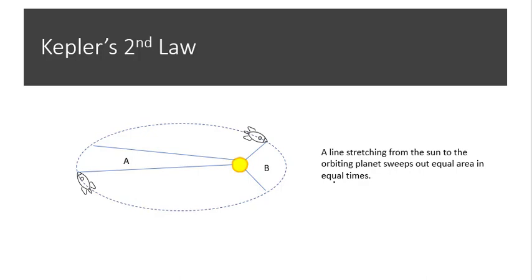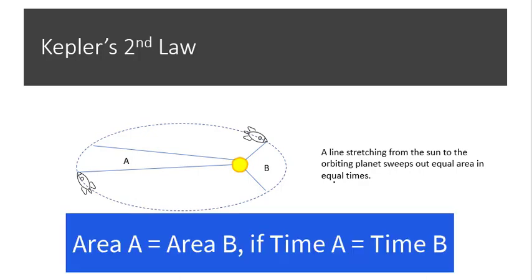Every second, the orbiting object travels a distance along that arc. If you imagine that slice of the pie that it covers, the area is going to be equal as long as the time it took to travel the distance is the same. So even though the distances are different, if the time is equal, the area that it traces out is equal.